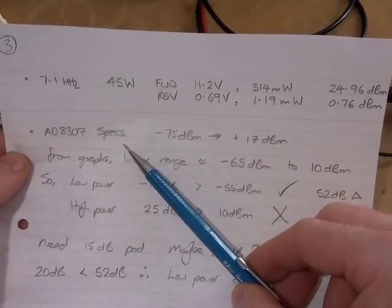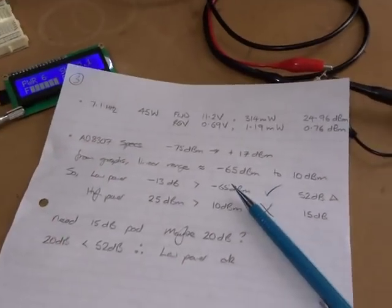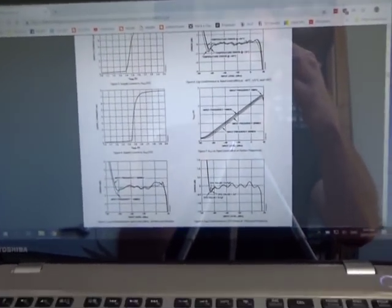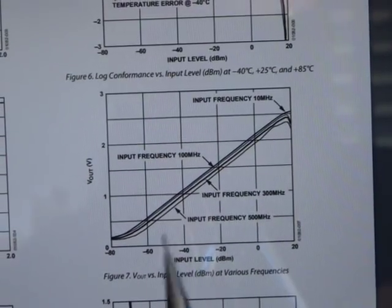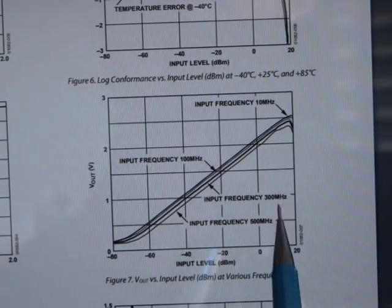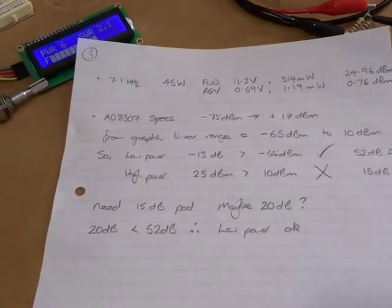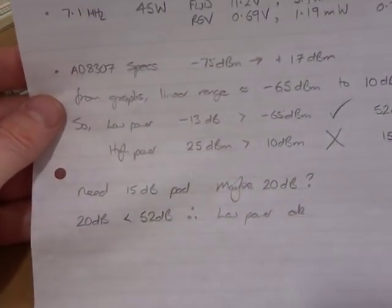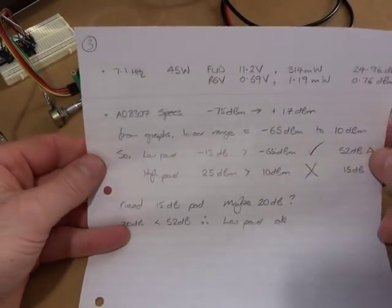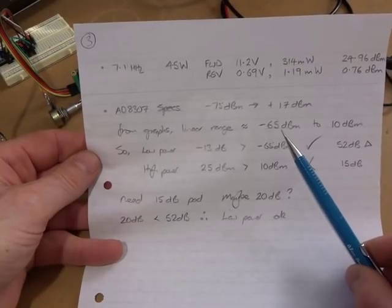The spec sheet says that the AD8307 has a dynamic range of minus 75 dBm to positive 17 dBm. However, if you look at the graphs on the spec sheet, the maximum linear portion of the transfer graph is approximately minus 70, let's go with say 65, up to around plus 10 or 15. So that's the most linear range. If I was to use that in the calculations, I want to make sure that I'm not going to exceed the maximum power that can go into the AD8307, and I also want to make sure at the other end that I'm actually going to be able to detect that low power end.